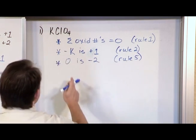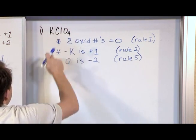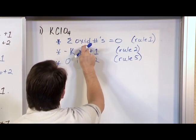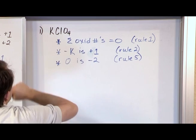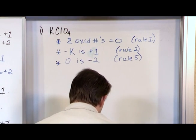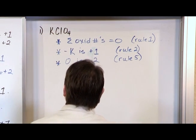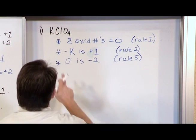And the reason is because I know what potassium is, I know what oxygen is, and I know that the sum of all of these oxidation numbers in this compound have got to be equal to zero. That is critical, crucial information.